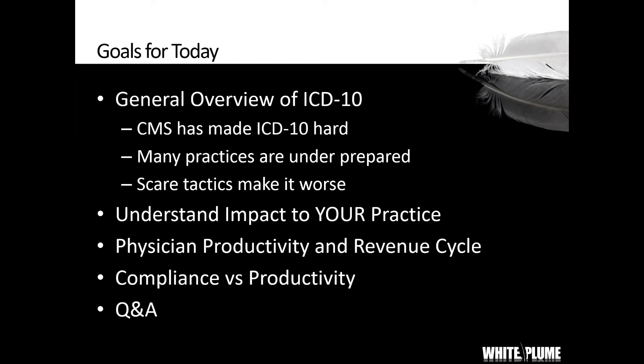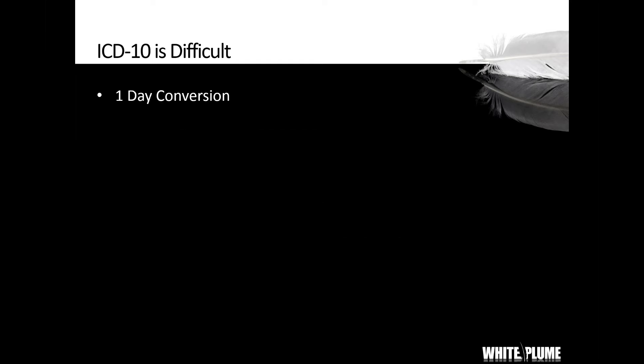So what makes ICD-10 difficult? Everybody knows that ICD-10 is a one-day conversion. The date is Thursday, October 1, 2015. It's an overnight conversion — there's no transition period and there's no grace period. On Wednesday, September 30th, you have to use ICD-9 codes. You cannot convert early. And on Thursday, October 1st, you have to use ICD-10 codes. It's a one-day conversion.